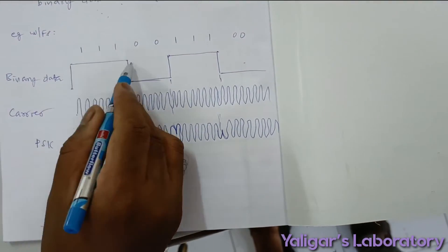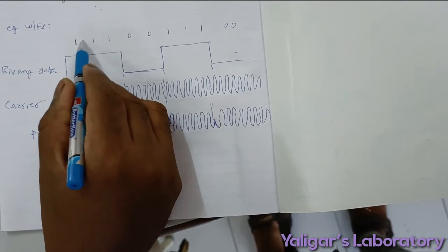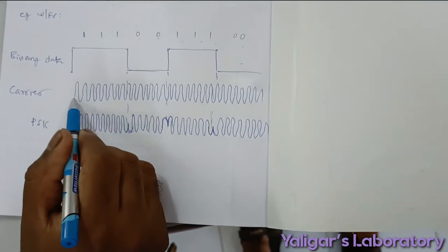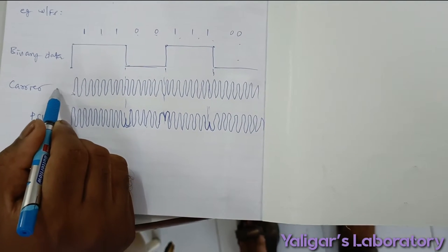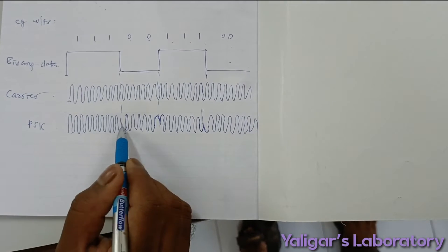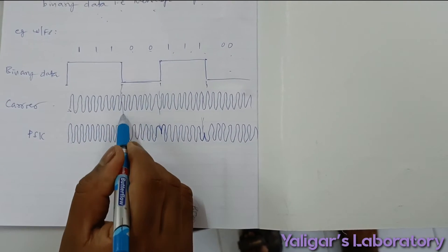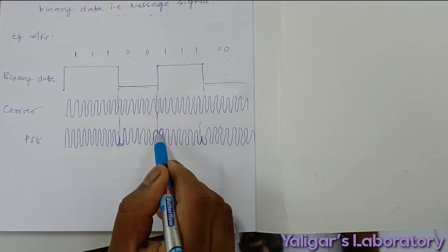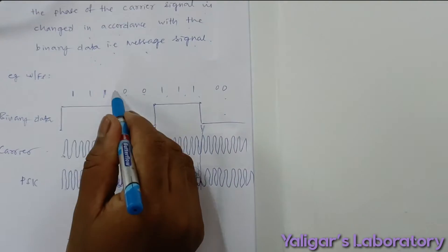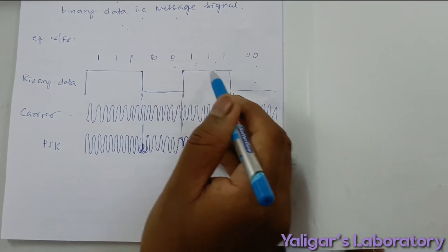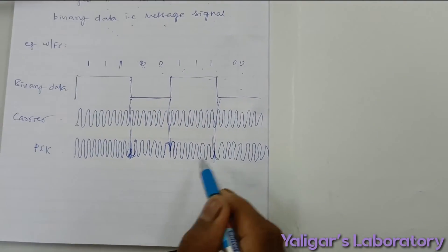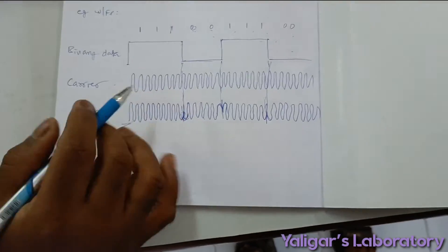This is an example waveform. The example bit sequence is 1110011100. This is the carrier signal having constant amplitude and frequency. Here the phase is changing in accordance with the binary data. You can observe the phase changes whenever the binary data transitions between 1s and 0s — a 180-degree phase reversal occurs alternately.